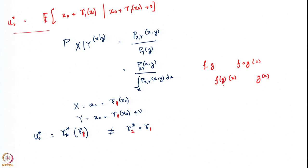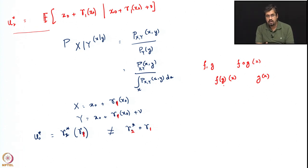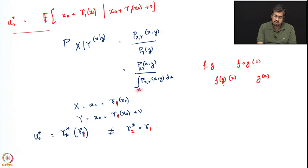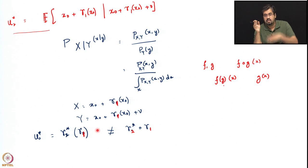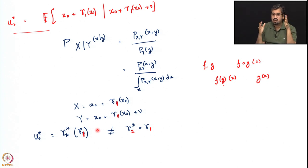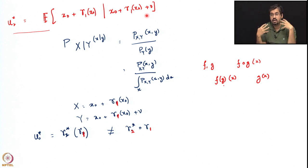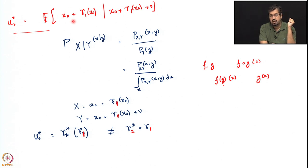This means that when you look at these conditional expectations, they involve integrals. When you are integrating over a space you are integrating over the entire range of gamma_1. So it is not any point value of gamma_1 that matters, but rather the entire shape of gamma_1 over the space. As a result, gamma_2 star becomes a function of gamma_1 but not a composition with gamma_1. This happens because gamma_1 is present in whatever we are conditioning on and also in whatever we are taking the expectation of.